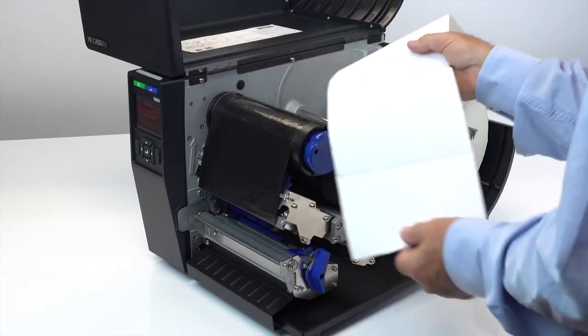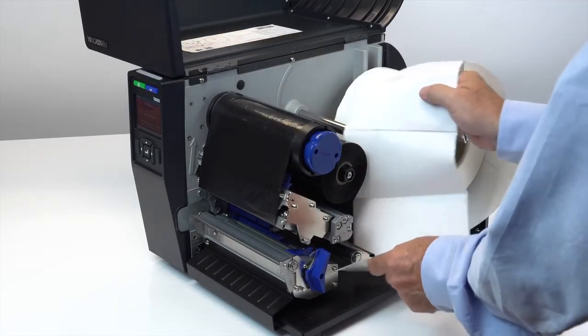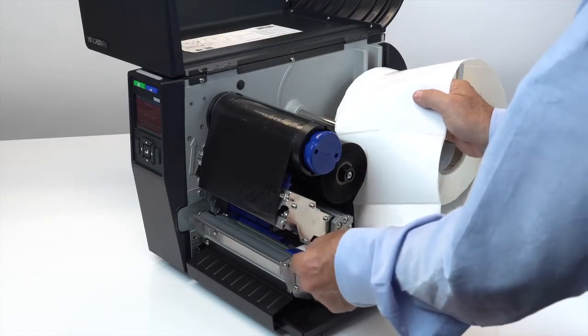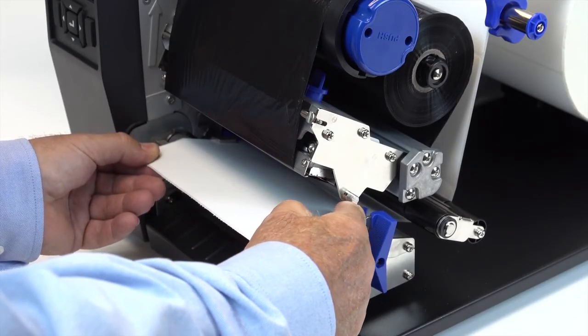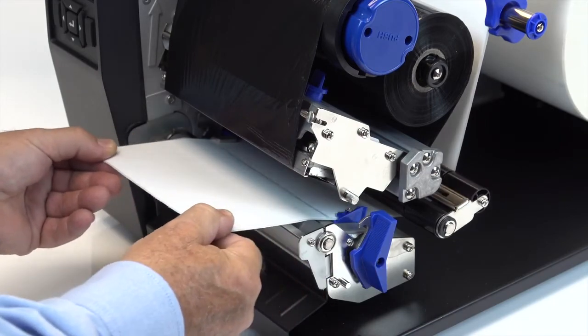Thread the media over the top of the media guide bar and then slide the width guide until it is flush with the outer edge of the media. Thread the media under the media damper and between the upper and lower sections of the media sensor assembly and then between the platen and print head.